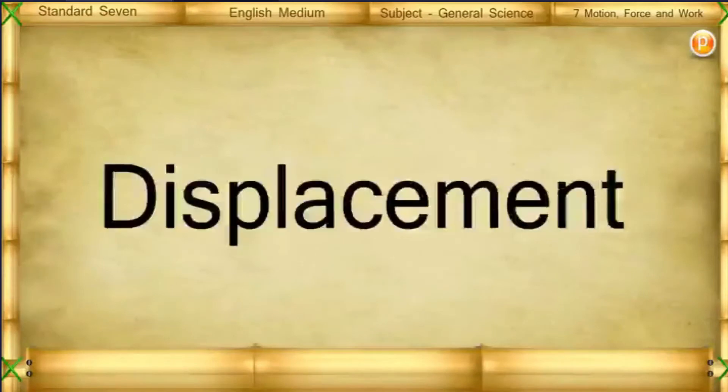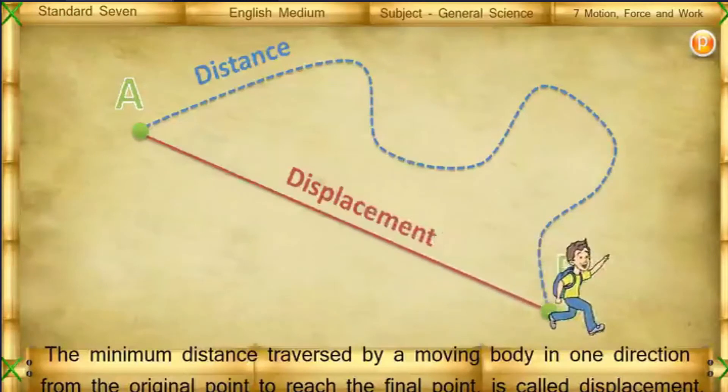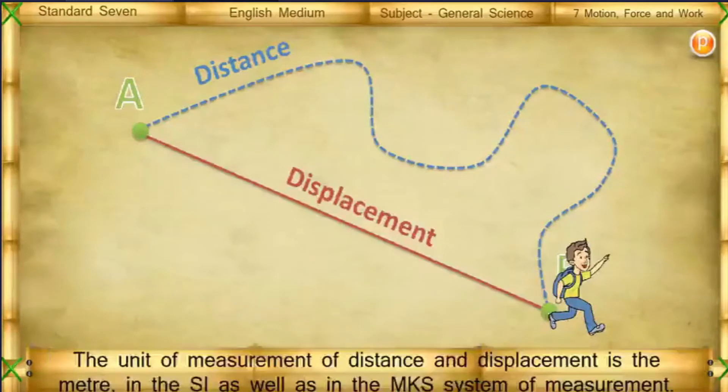Displacement: The minimum distance traversed by a moving body in one direction from the original point to reach the final point is called displacement. In displacement, both distance and directions are taken into account. Therefore, displacement is a vector quantity. The unit of measurement of distance and displacement is the meter in the SI as well as in the MKS system of measurement.